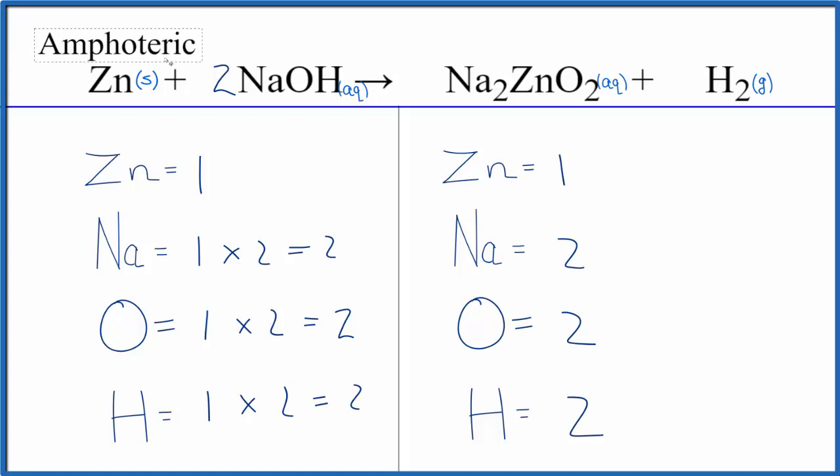Zinc is what we call an amphoteric metal. It'll react with a base like sodium hydroxide, but it'll also react with an acid like hydrochloric acid. So we say it's amphoteric—it can react with bases or acids.